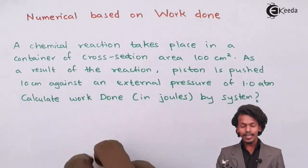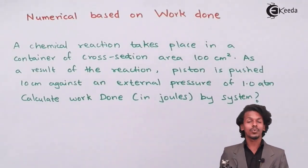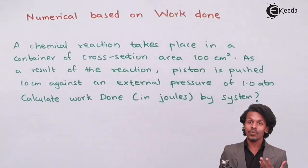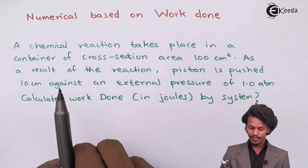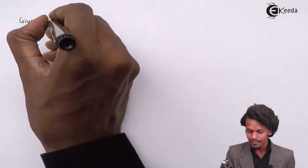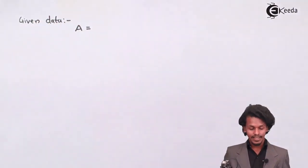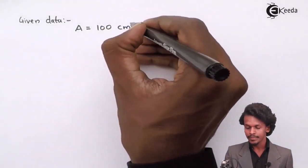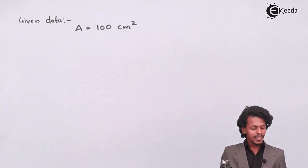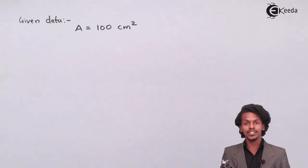Before solving, we need to extract the data from the given question. The given data: cross-section area (A) = 100 cm². The piston has been displaced from its original position — the displacement is 10 cm.